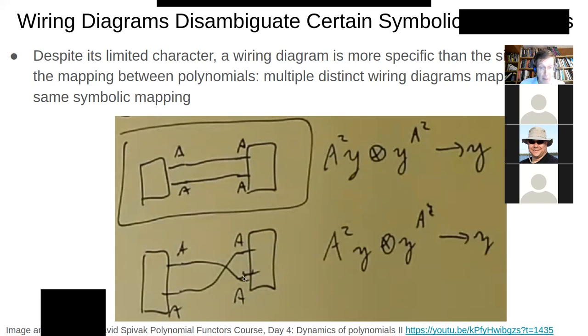but it goes to the first or to the lower port of this. The upper port on the left goes to the lower port on the right. And the lower port on the left goes to the upper port on the right. Whereas this one, the upper went to upper, lower went to lower.